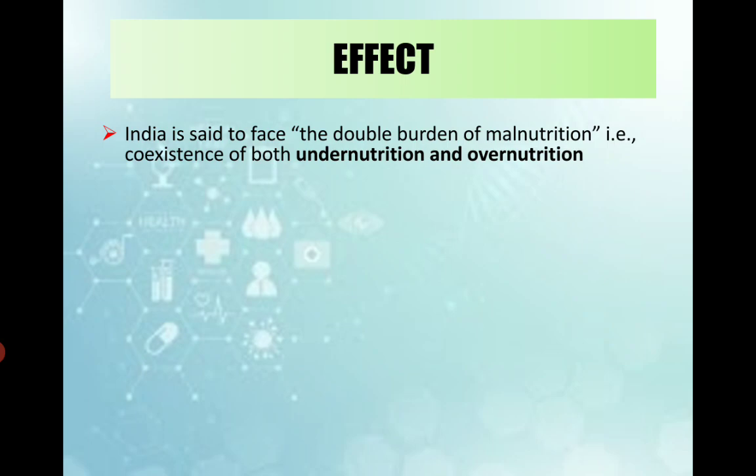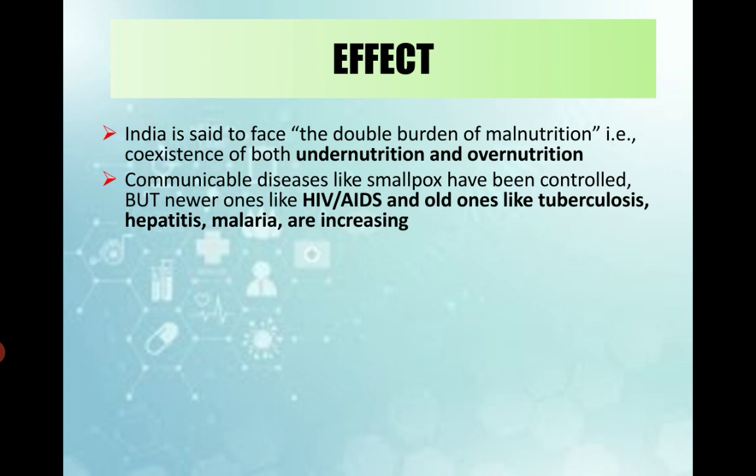India is said to bear the double burden of malnutrition - the first photograph on the first slide showed this. Here you have undernutrition and overnutrition which co-exist; both are present in our country. Communicable diseases like smallpox have been controlled, and India had been a polio-free country. But newer ones like HIV, AIDS, corona are adding, and some old chronic diseases like tuberculosis, hepatitis, malaria, dengue, chickenpox are all increasing.